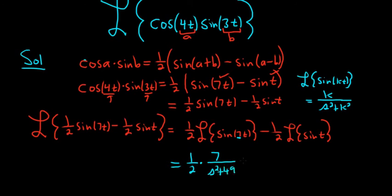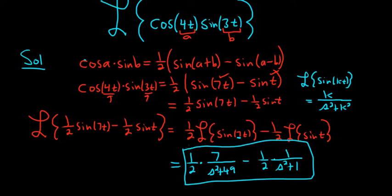Minus one-half, and in the second case, k is 1, so it's 1 over s squared plus 1. And that is the final answer. I hope this video was helpful.